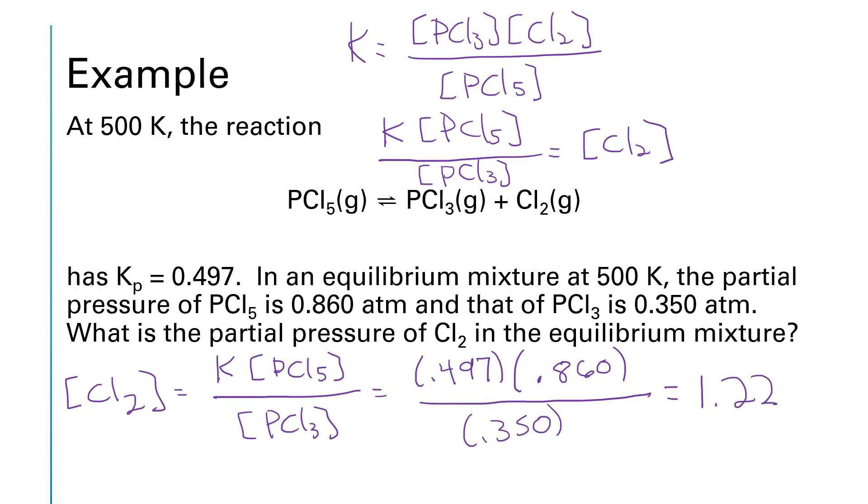Now, you might have noticed that this says Kp, and our numbers were given in terms of atmospheres instead of molarities. Equilibrium constants come in different flavors, and they have different subscripts on them. If we have a Kc, that means it's in terms of concentration, and we use molarity. A Kp means that it's in terms of pressures, and we're going to use atmospheres. We'll also see in the upcoming chapters things like Ka, Kb, and Ksp. So there are lots of little variations on K that we'll use with those subscripts.